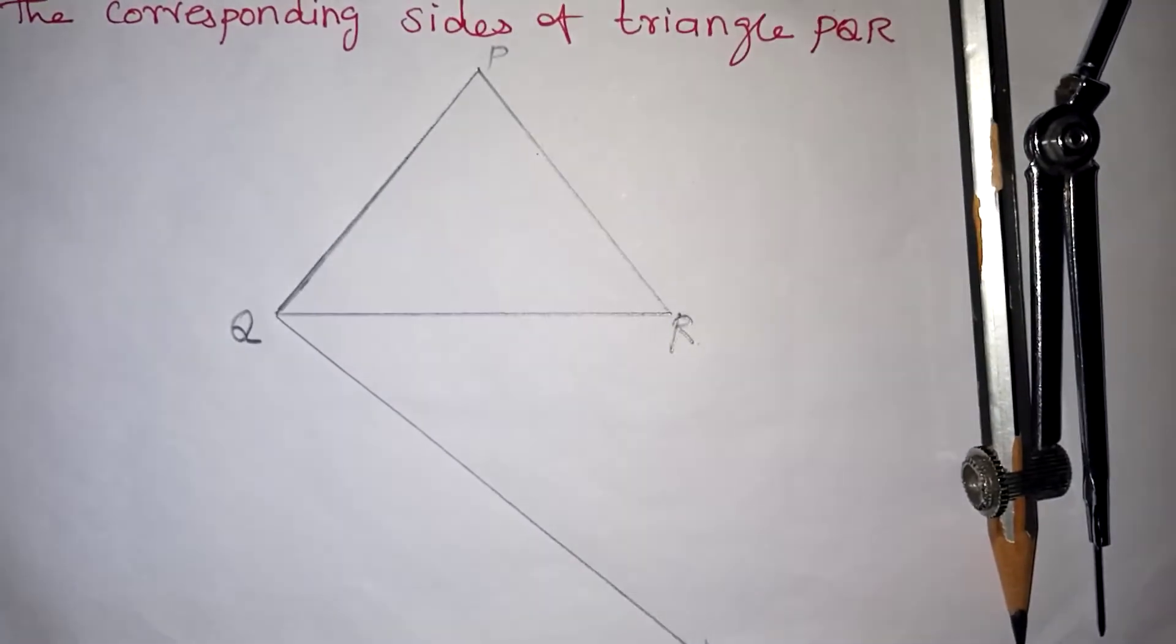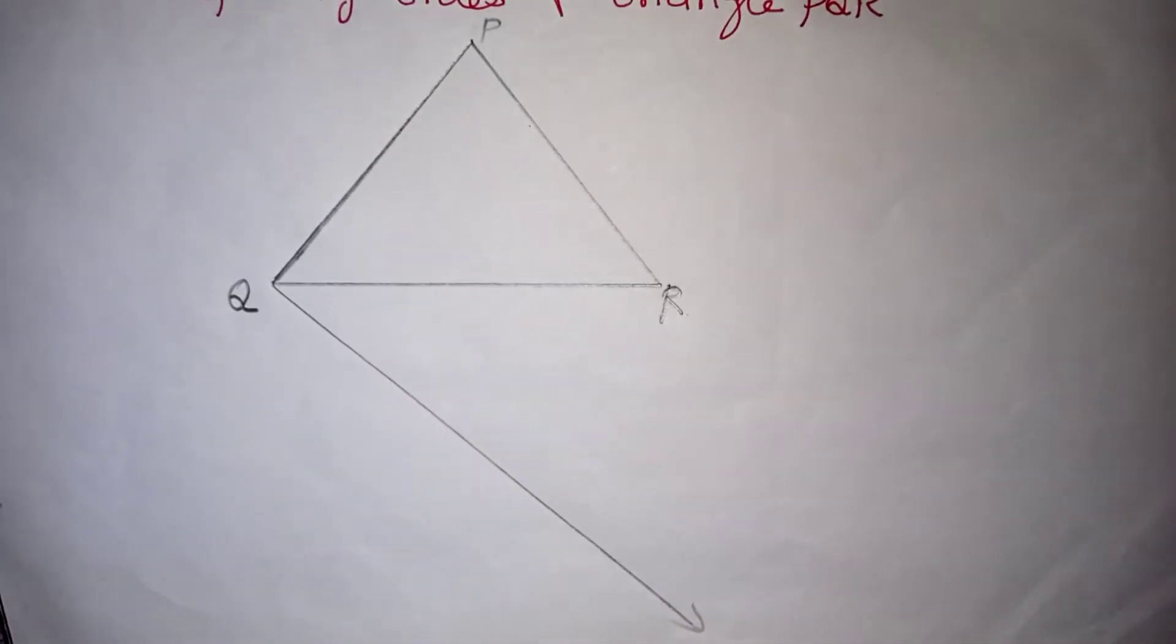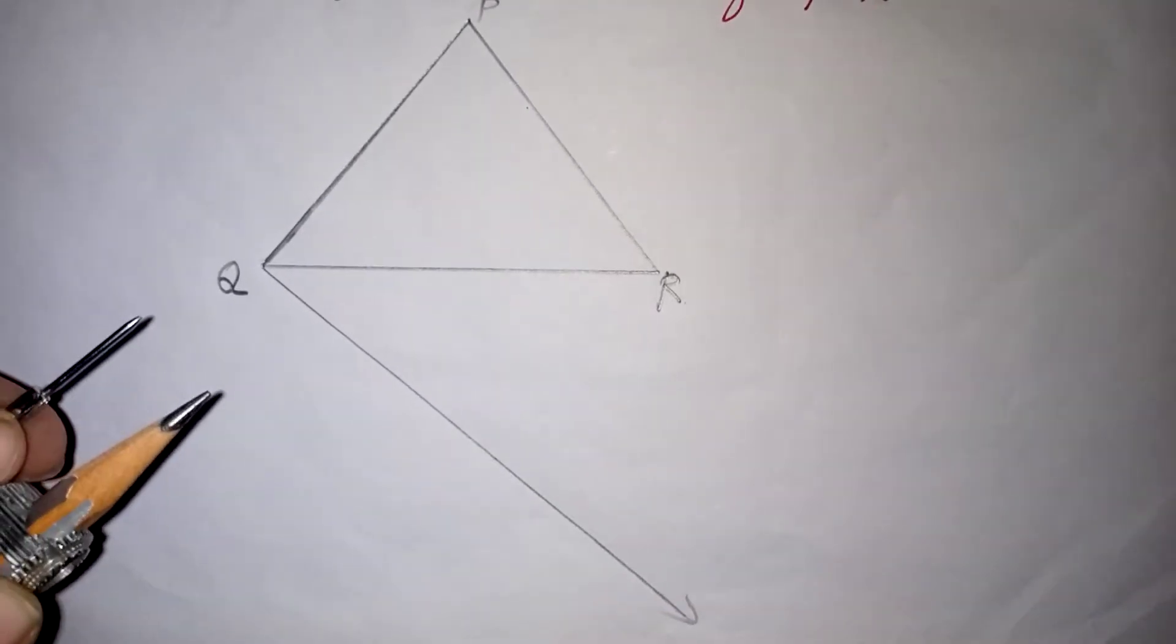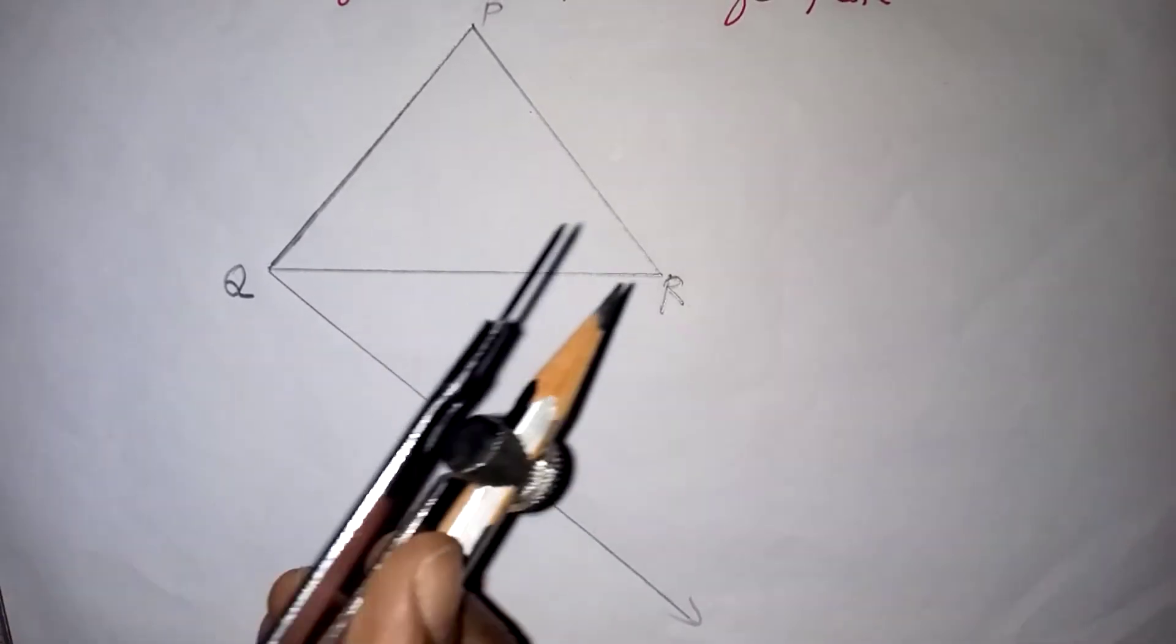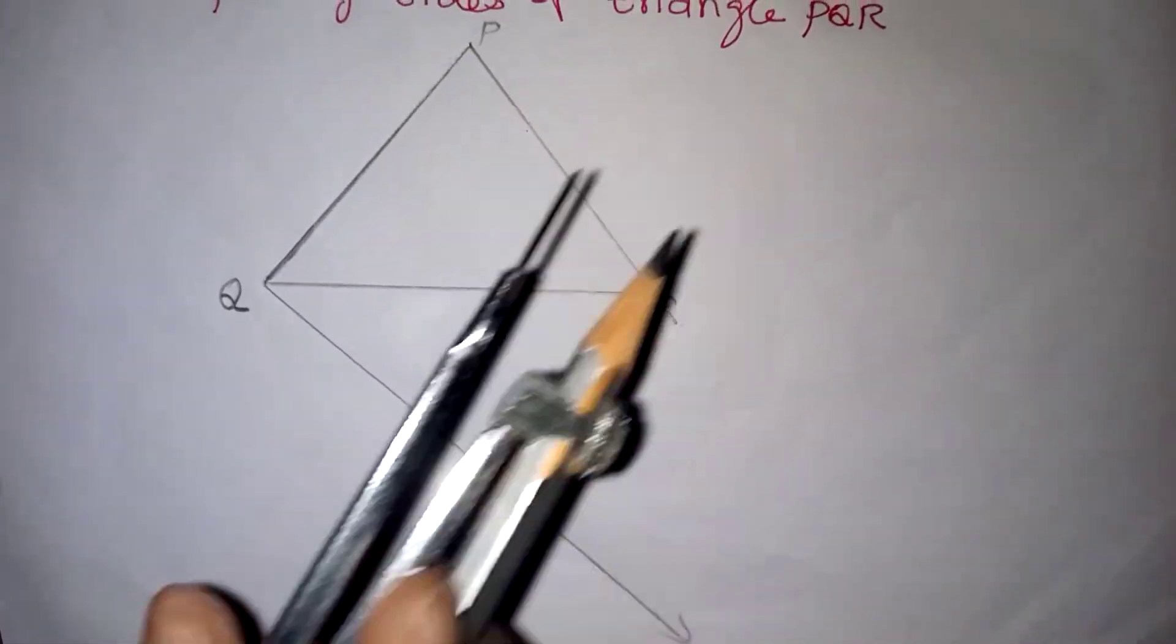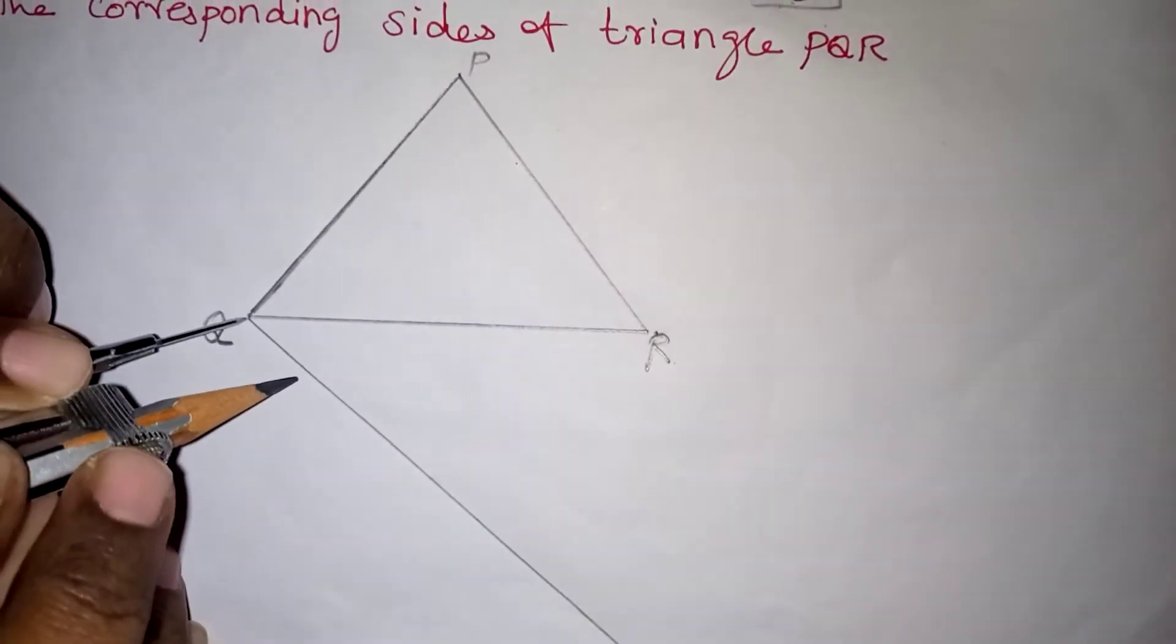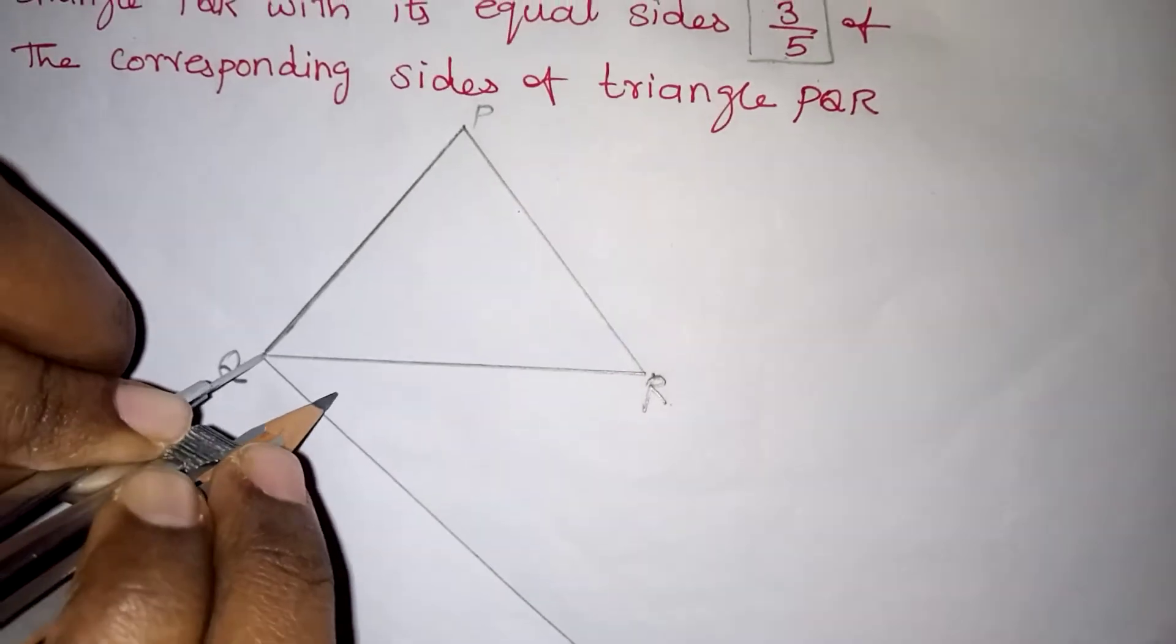Now after drawing this line, take your compass with any measurement. It can be 1 centimeter or 2 centimeters. Here my big number is 5, so I am going to cut 5 arcs now. From Q, keep your needle in Q and just cut 5 arcs.